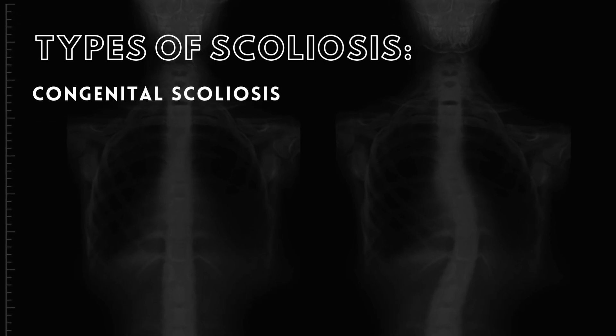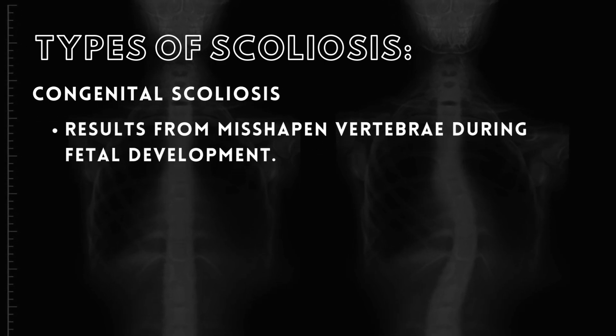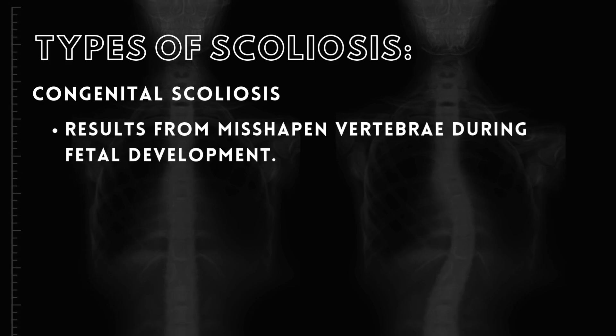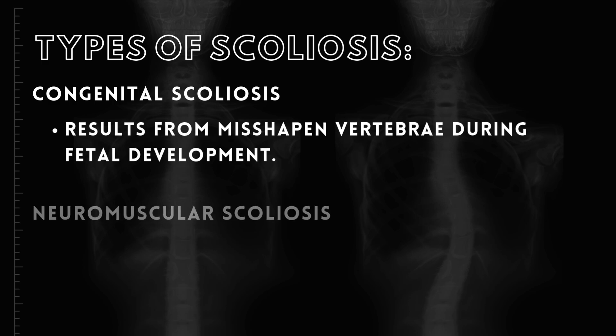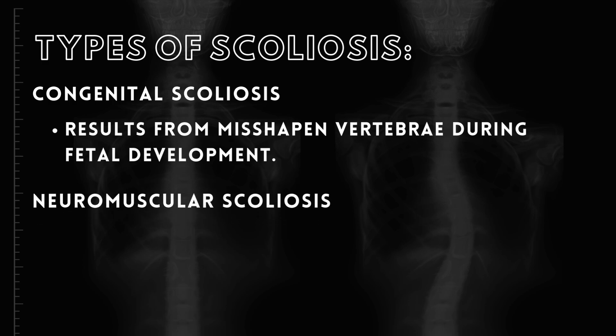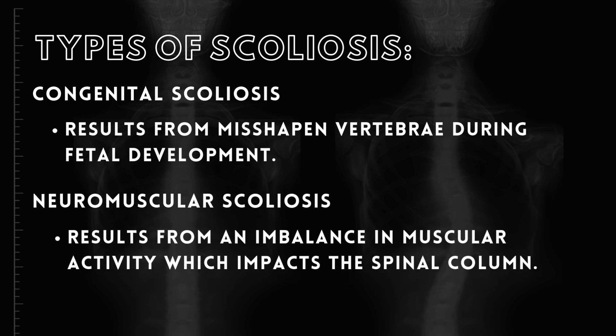There are several major types of scoliosis. Congenital scoliosis results from misshapen vertebrae during fetal development, and this type often gets worse as the individual ages. Neuromuscular scoliosis develops in individuals with conditions such as cerebral palsy, muscular dystrophy, or spina bifida, due to an imbalance of muscular activity which impacts the spinal column.